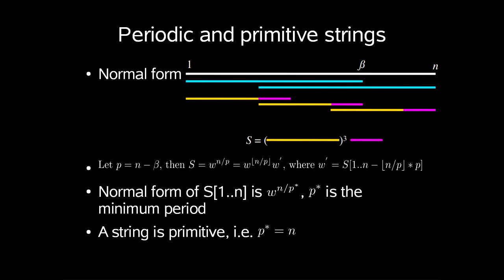w prime, where w prime is the string S from 1 to n minus n divided by p rounded down times p. This might be a little cryptic. So we'll just say that the normal form of S[1..n] is w^(n/p*) where p* is the minimum period.